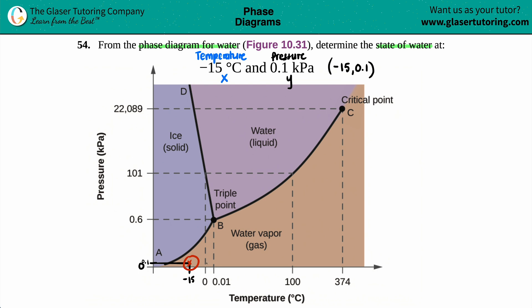This is your point, negative 15 comma 0.1. And as we can see here, it is going to be a gas. So at this temperature and pressure, water will be in its gas phase. And that's it. Let's box it off. And we are done.